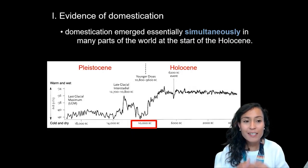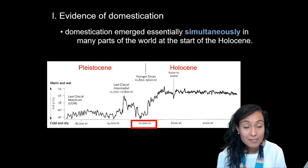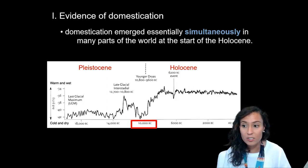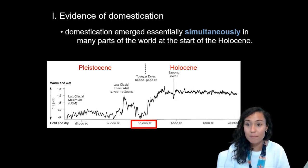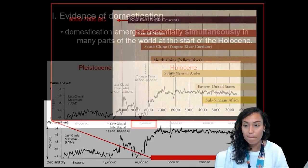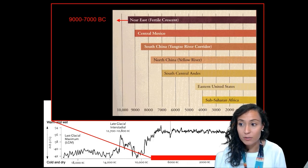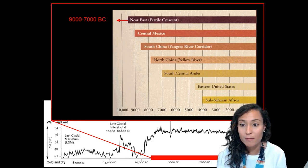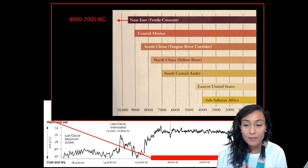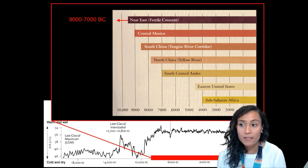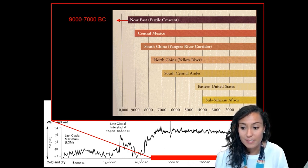In evolutionary time, domestication emerged essentially simultaneously in many parts of the world at the start of what's called the Holocene, so roughly 10,000 BC. The earliest forms of agriculture that we have in the world come from the Near East and date to roughly between 9,000 and 7,000 BC.